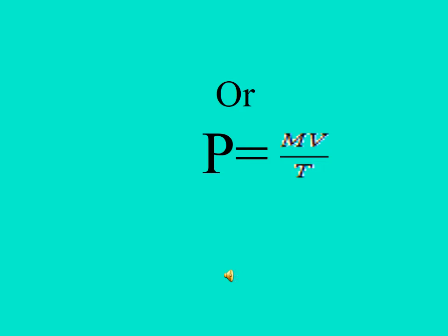Irving Fisher's equation is: MV = PT, or rearranged, P = MV / T.